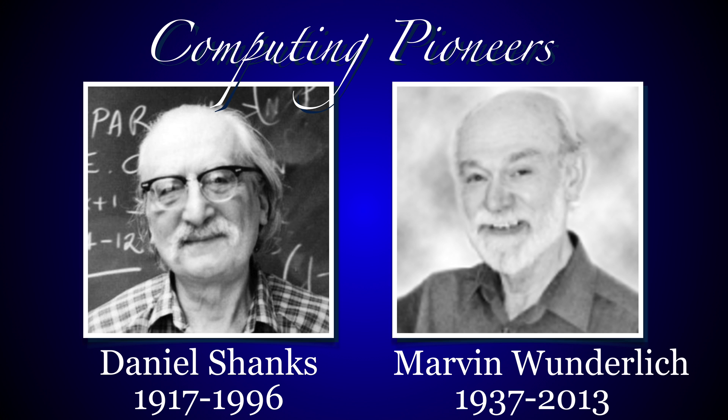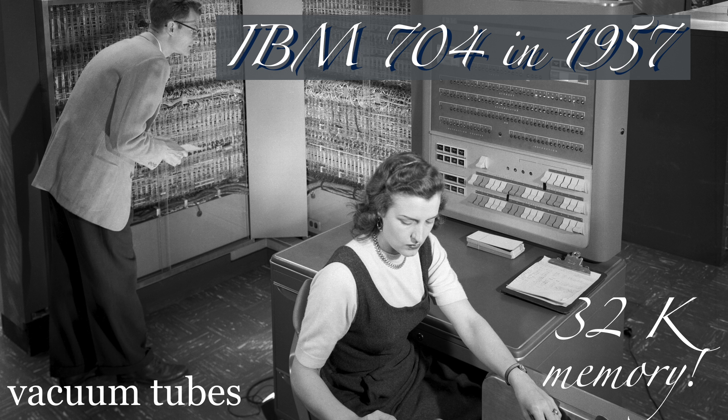The first experiments were done by human calculators, and some of the first to use computers for number theory experiments were Daniel Shanks and Marin Wunderlich. Wunderlich computed the prime race until 1.3×10⁷. In the 60s, computer equipment was quite primitive. Daniel Shanks mentions working on an IBM 704. That machine computed with vacuum tubes and had a whopping 32 kilobytes of memory.